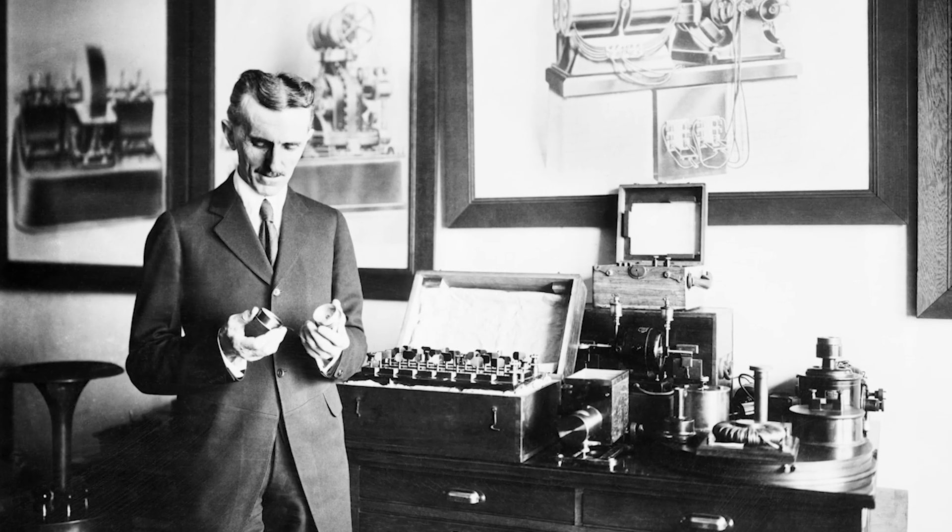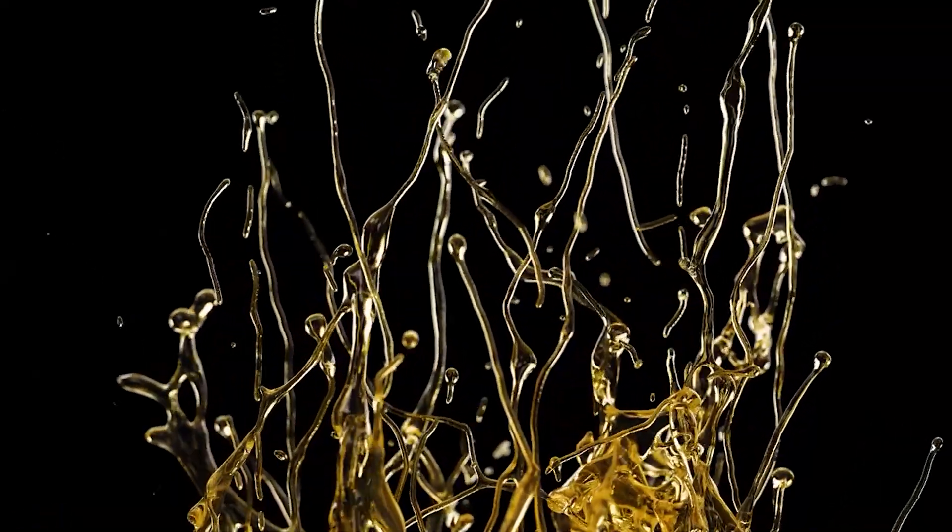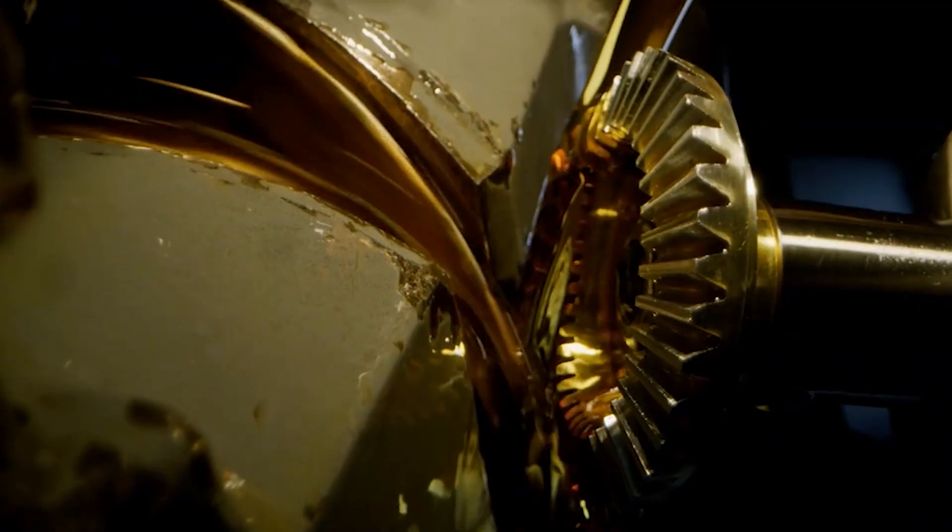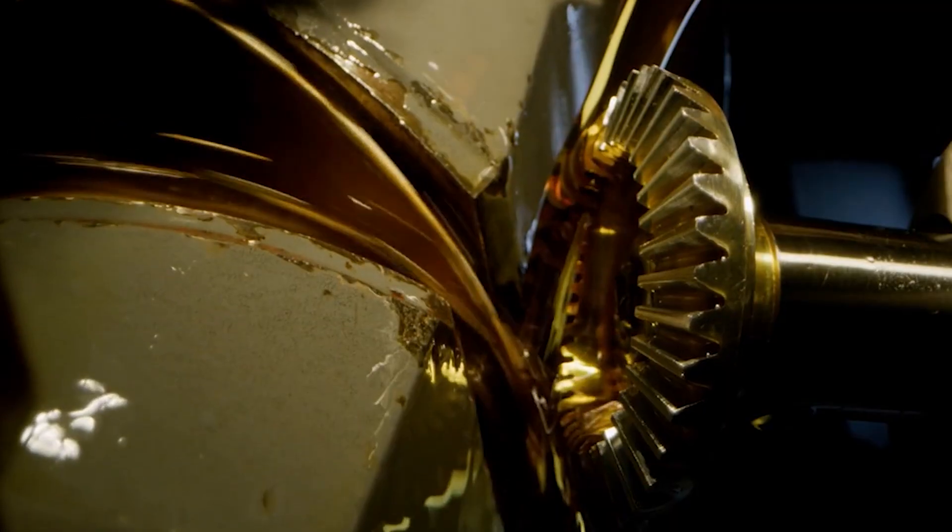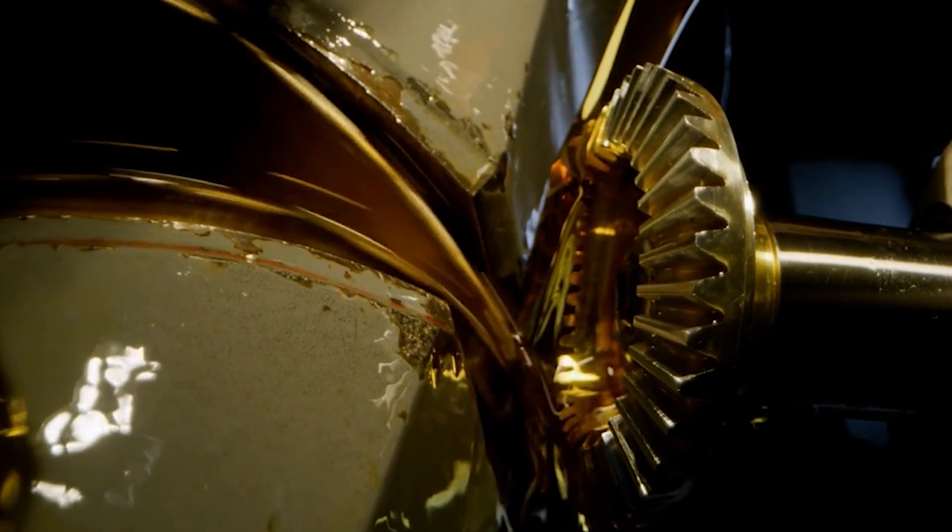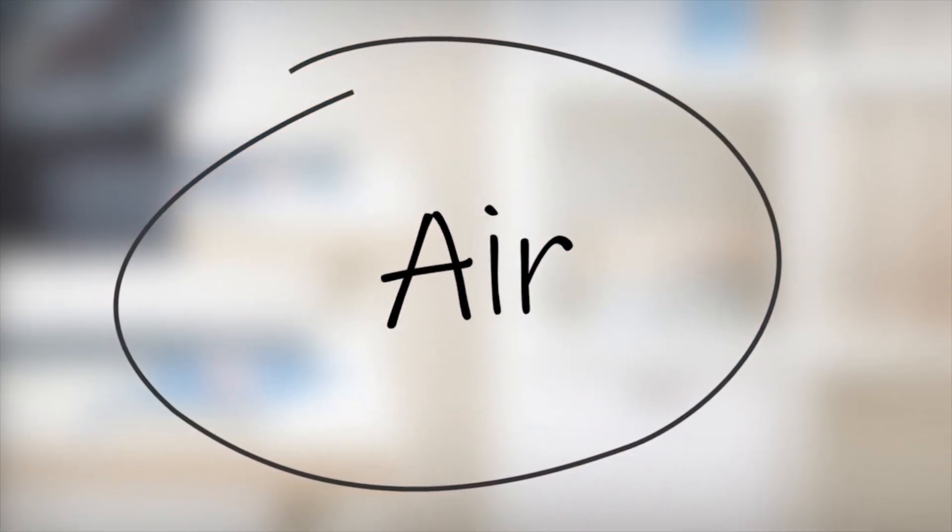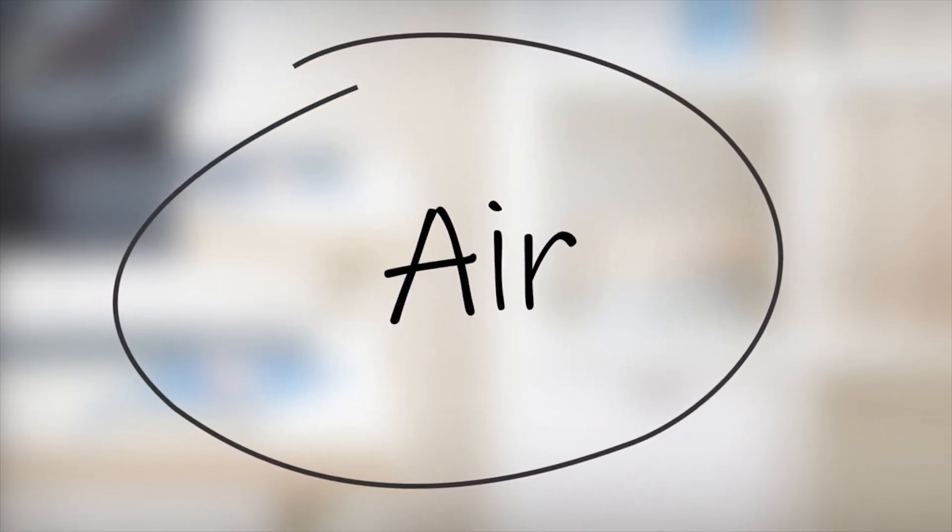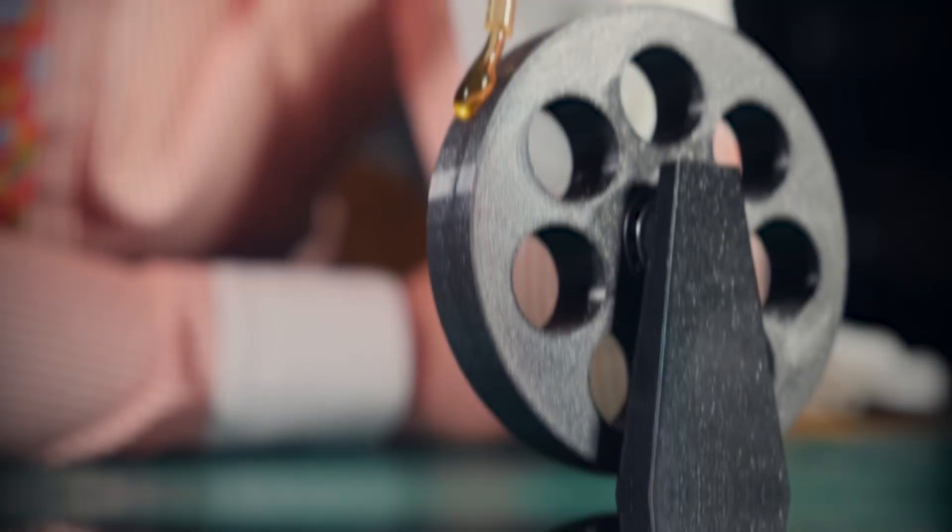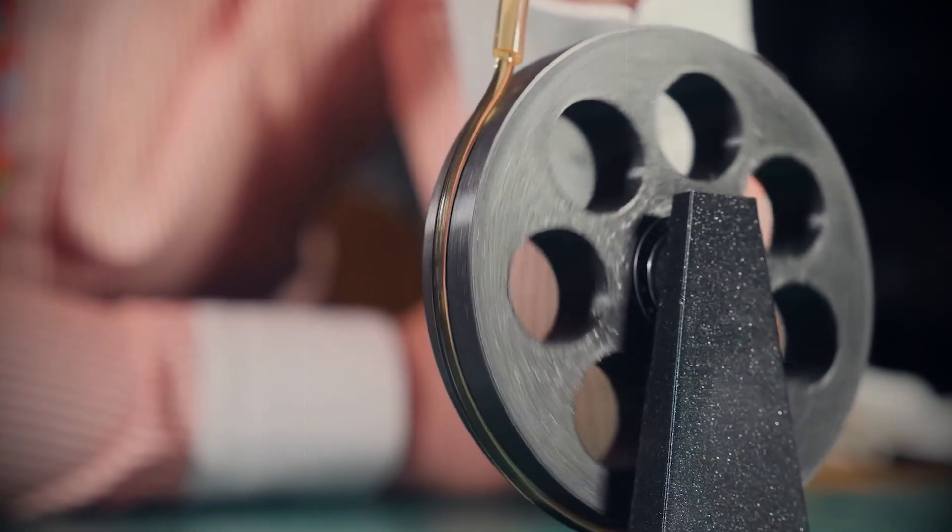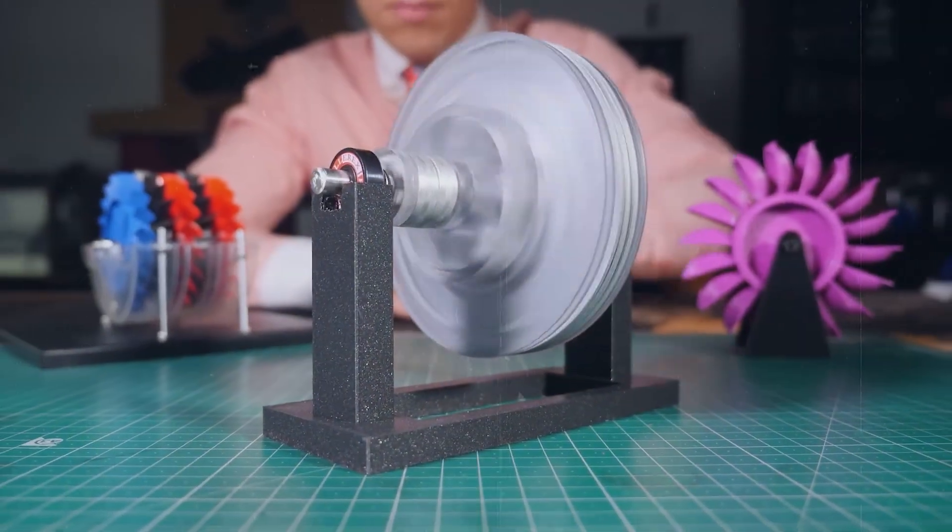The answer lies in something Tesla called the boundary layer effect, or what can be described more simply as the stickiness of fluids. When a fluid flows over a surface, a thin layer of it clings to that surface because of viscosity, the internal friction inside the fluid. This means that even something as light as air can drag a surface along if it moves fast enough. Imagine a smooth metal cylinder that can spin freely. If someone pours thick honey on it, the honey sticks to the surface and slowly makes it turn. That's viscosity in action.